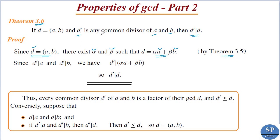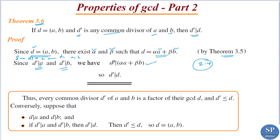We are given that d-dash is any common divisor of a and b. Since d-dash is a common divisor of a and b, we have d-dash divides a and d-dash divides b. Therefore, d-dash divides the linear combination of a and b. By theorem 2.4, d-dash divides a and d-dash divides b, therefore d-dash divides alpha·a plus beta·b. So d-dash divides d, because d equals alpha·a plus beta·b.